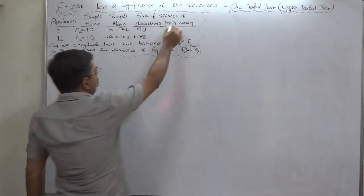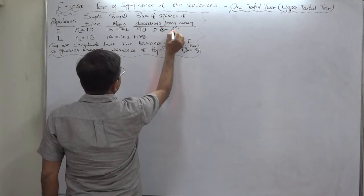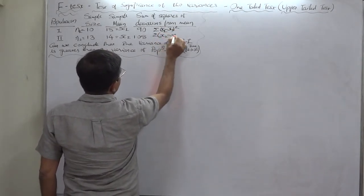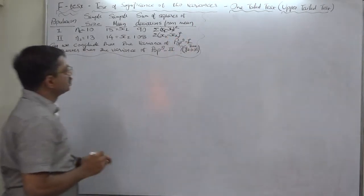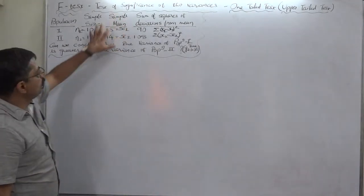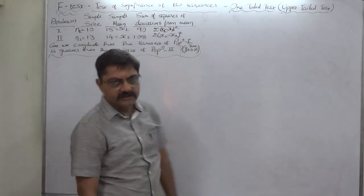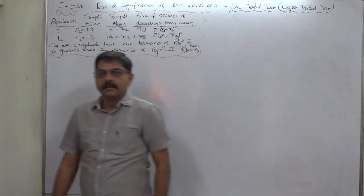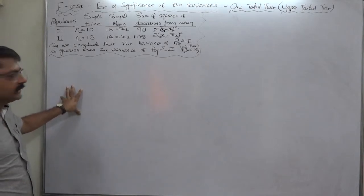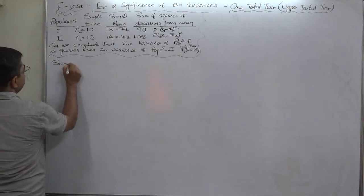The sums of squares of deviations taken from their respective means are readily available. There is no role of the sample mean as far as the F-test of significance of two variances is concerned. To calculate the F-ratio, we need the sample variances — variance of sample one as well as sample two. So let's calculate the sample variances.